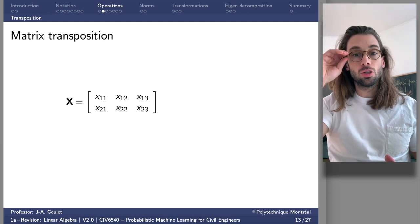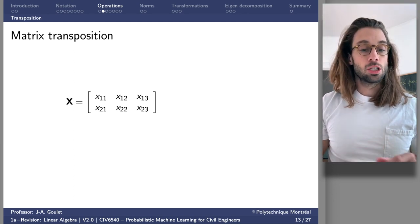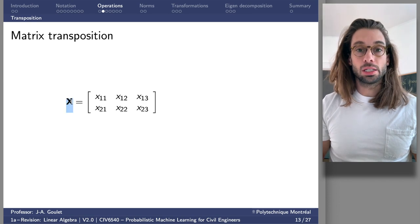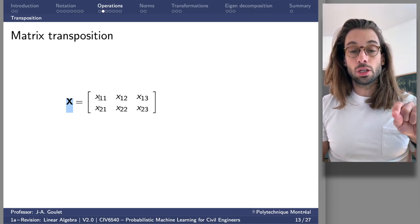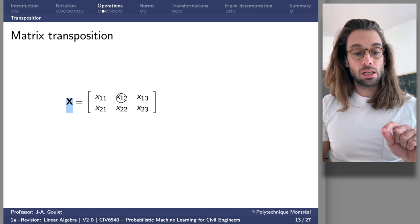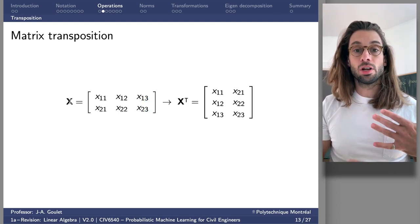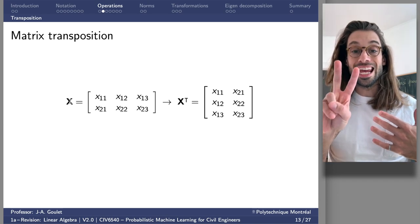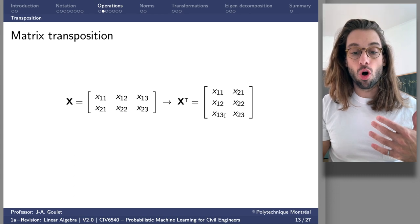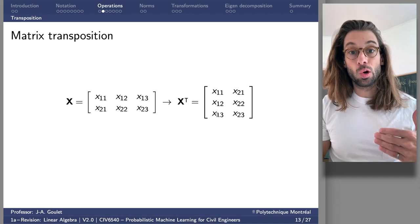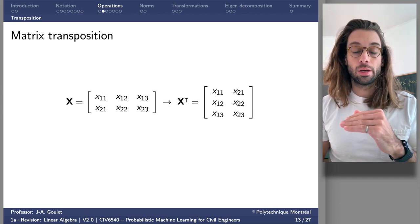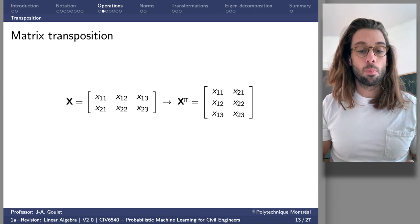The first operation we're going to look at is transposition of a matrix. If we have a matrix X where the first index refers to rows and the second to columns, taking the transpose is equivalent to permuting the indices in the original matrix. So element (1,3) becomes the element at the third row, first column. This is the permutation operation.